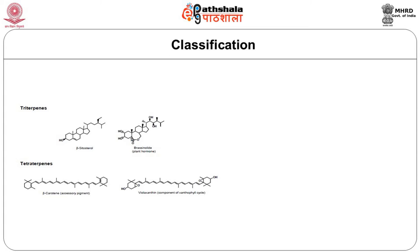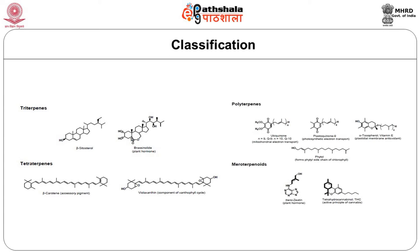Polyterpenes include ubiquinone at the mitochondrial electron transport chain and plastoquinone at photosynthetic electron transport. Alpha-tocopherol, otherwise known as vitamin E, is a plasmalemmal membrane antioxidant consumed daily. Phytol also comes under polyterpenes. Trans-zeatin is a plant hormone, and tetrahydrocannabinol is the active principle of cannabis, coming under neuroterpenoids classification.